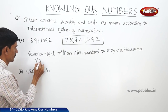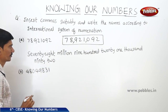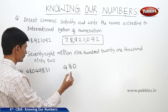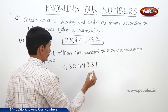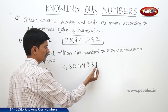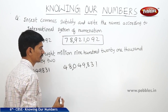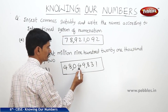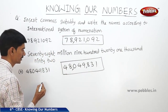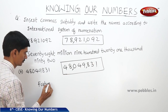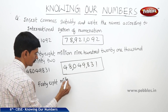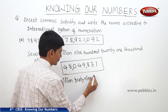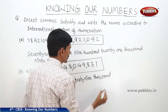The next number is 48049831. We use a comma after every 3 digits from the right. So this is read as 48,049,831 — forty-eight million, forty-nine thousand, eight hundred thirty-one.